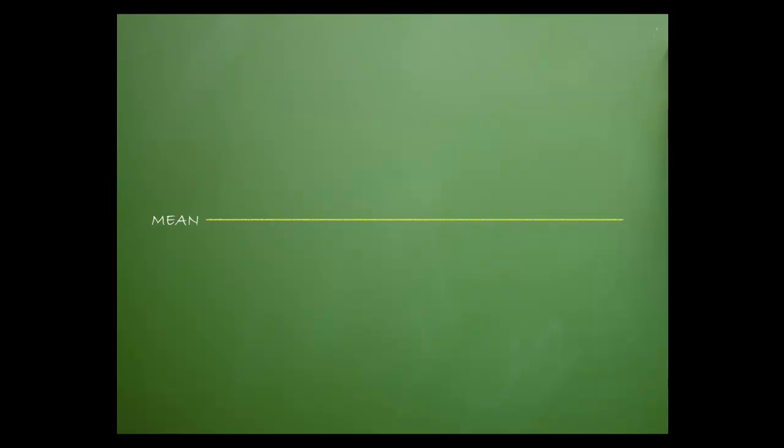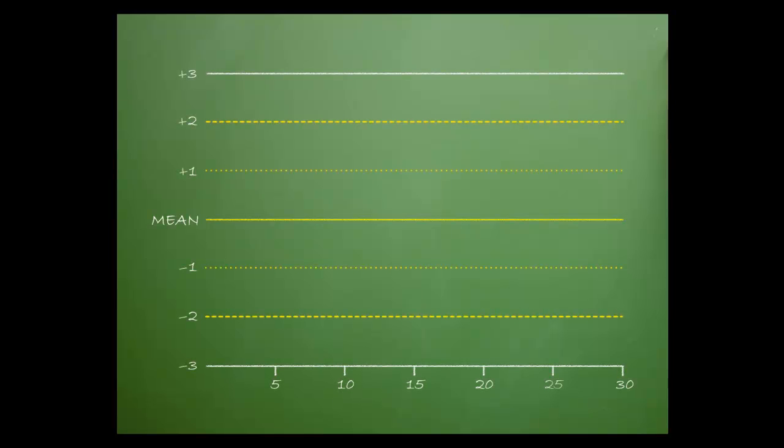To build an LJ chart we start with the mean of our control data. The next step is to calculate the standard deviation. We now have the framework for our LJ chart.